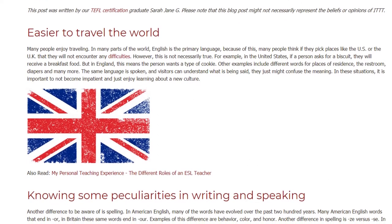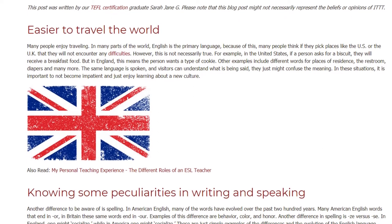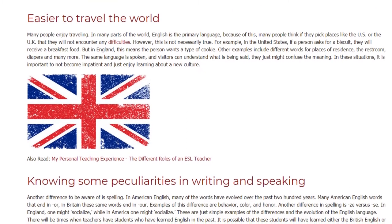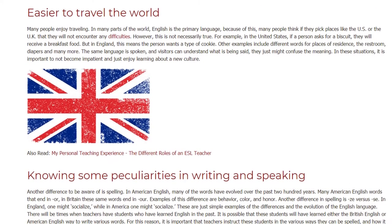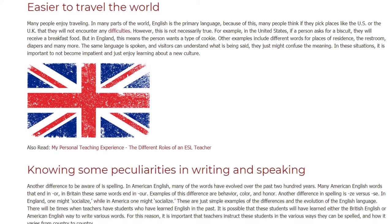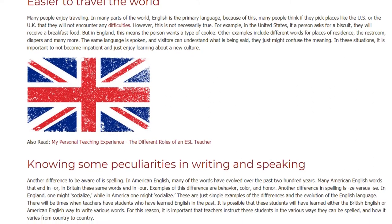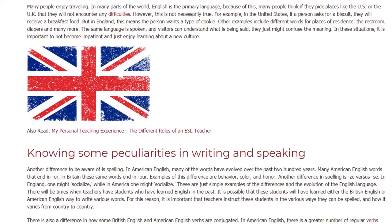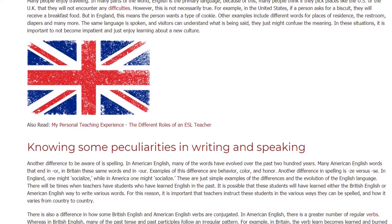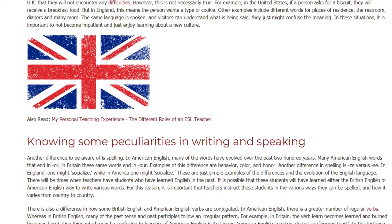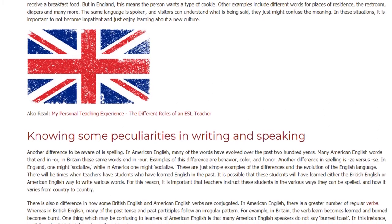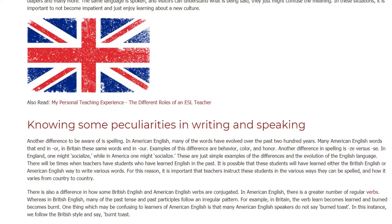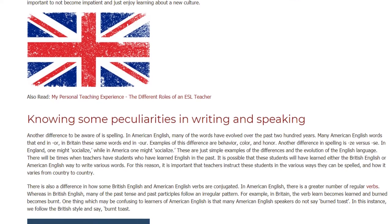Knowing some peculiarities in writing and speaking: another difference to be aware of is spelling. In American English, many words have evolved over the past 200 years. Many American English words that end in '-or' — in Britain these same words end in '-our'. Examples of this difference are 'behavior,' 'color,' and 'honor.' Another difference in spelling is 'z' versus 's': in England one might write 'socialise,' while in America one would write 'socialize.'